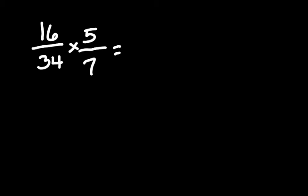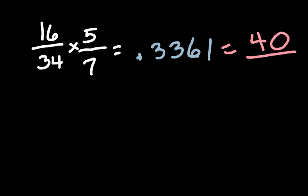Okay, here we go. 16 over 34 times 5 over 7. Work it out. Did you get it? If not, go back and double check those parentheses. The answer is 40 over 119.